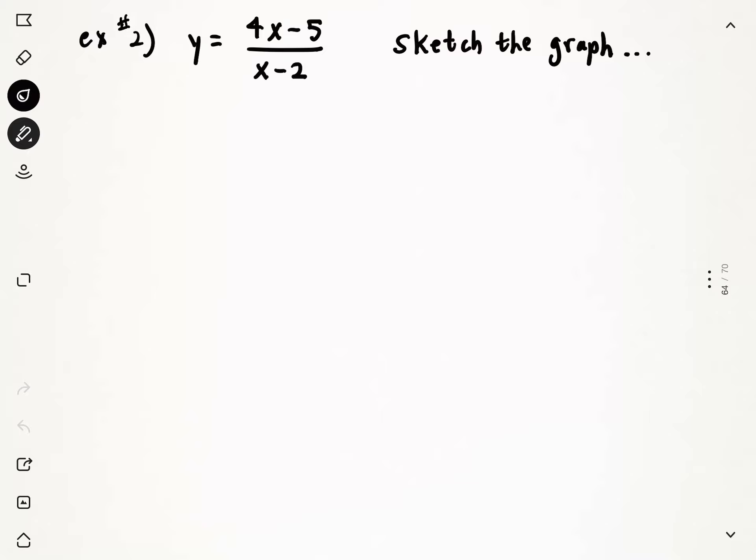How do you know it's rational? Well, it has an x on the denominator. That's basically what a rational function is in general. If you see an x on the denominator, then it fits into that category.